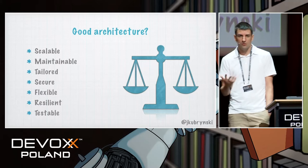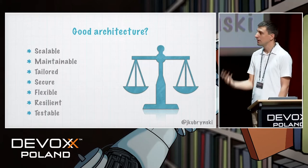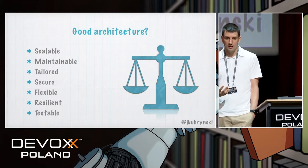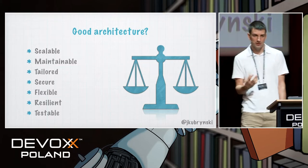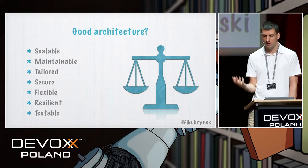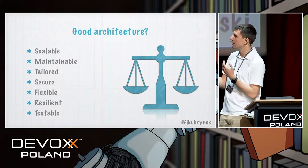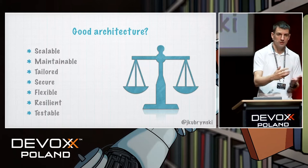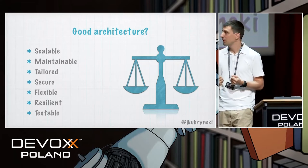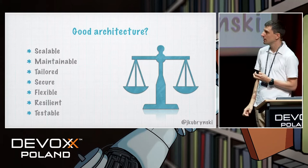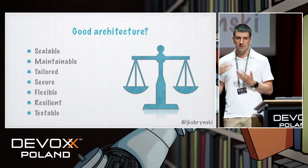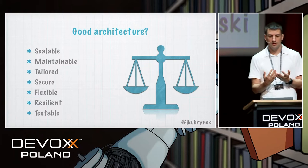For people in fast-growing companies, scalable architecture is the most important thing. If you work in a bank with a legacy application, you see maintainability as the key principle. If you work in a software house for different customers, creating a tailored architecture that fits the particular client requirements is most important. For some, security is important; for others, flexibility, resilience, or stability. These are all features you can consider as good architecture.